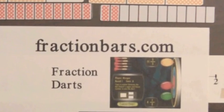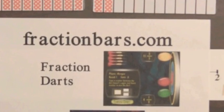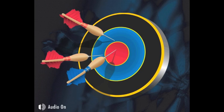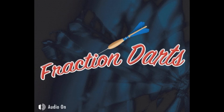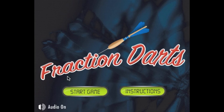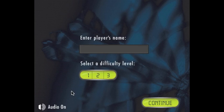Let's look at a game from FractionBars.com that uses mixed numbers. In Fraction Darts, we will select the option of one player, a difficulty level of one, and type the player's name.